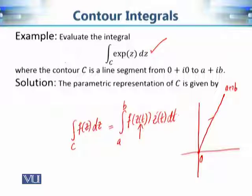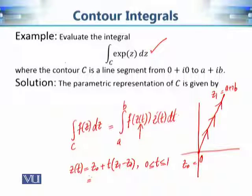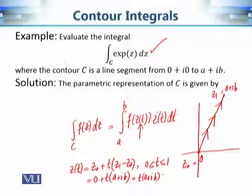We want a parameterization of this line segment. From previous modules, if the initial point is z₀ and the final point is z₁, then the parameterization is z(t) = z₀ + t(z₁ − z₀), with t varying from 0 to 1. Using z₀ = 0 and z₁ = a + ib, we get z(t) = t(a + ib), t ∈ [0, 1].